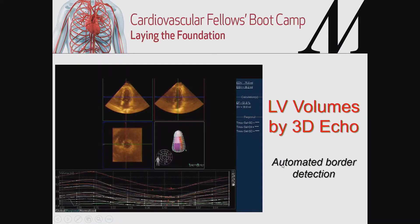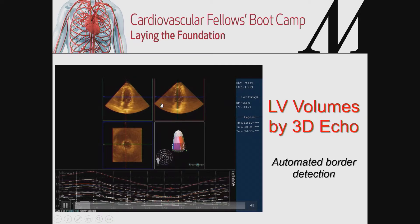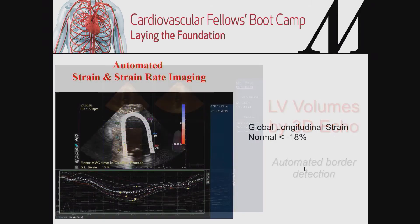Nowadays, using echocardiography with three-dimensional imaging, you can cut the left ventricle in all three planes — short axis and two double orthogonal long axis views — to generate 3D-derived volumes and accurately assess left ventricular ejection fraction. The software has become much better, with semi-automated border detection now available.